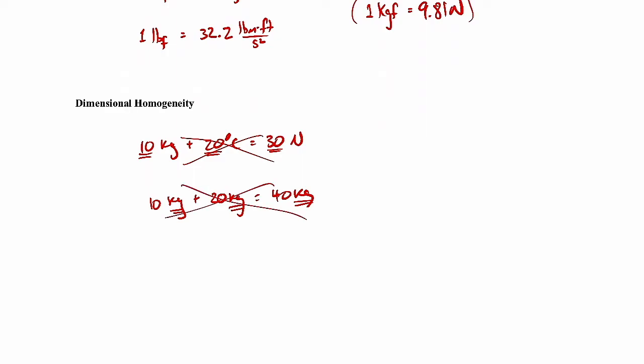So you have to have both simultaneous. You have to have the units work out as well as the magnitudes. And this is a concept you've been familiar with since high school. But I just repeat it here because it's going to be a concept we'll use later in the course when we talk about dimensional analysis.